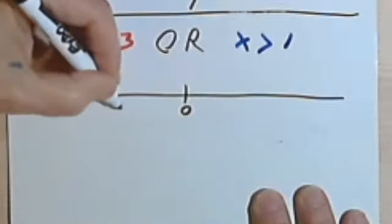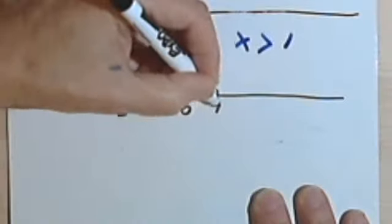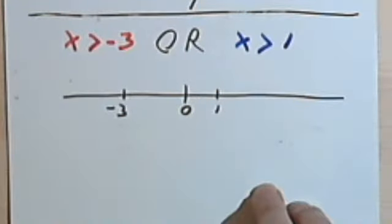Let's look at that on a number line. Here's a 0, I guess I want a negative 3 somewhere like this, and maybe a 1 over here.